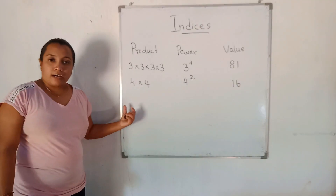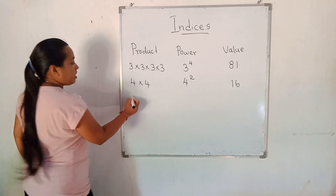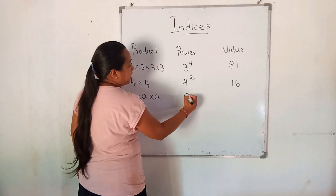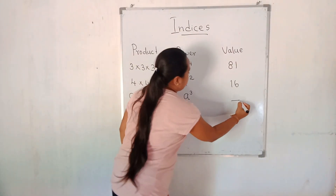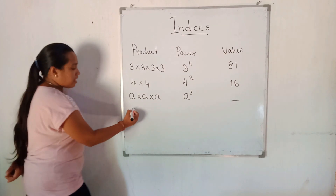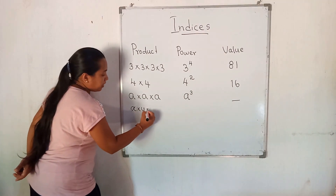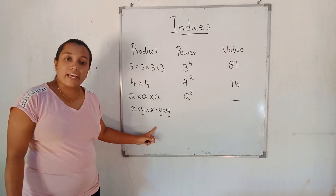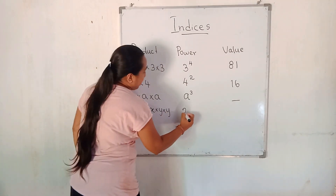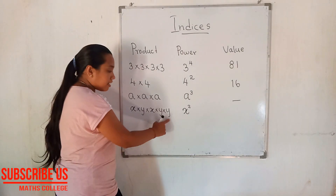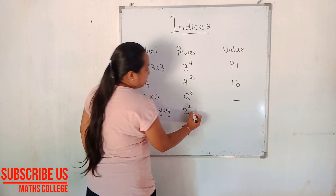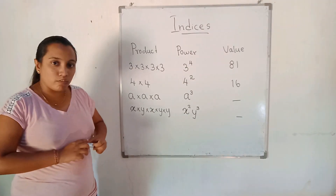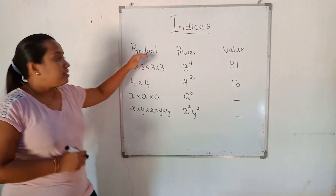Can we apply the product rule to algebraic terms as well? For example, A multiplied by A multiplied by A gives a power of A to the power 3. However, the numerical value cannot be found for algebraic terms. Remember the three words: product, power, and value.